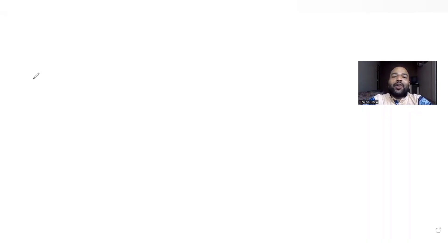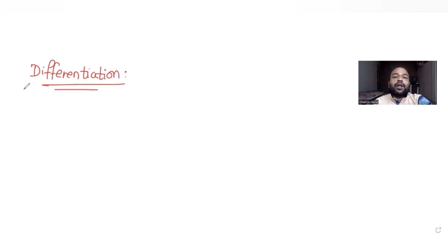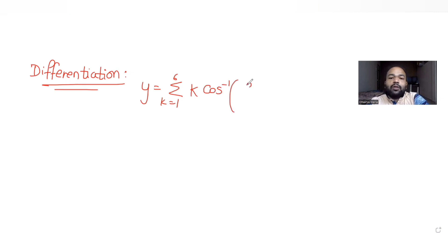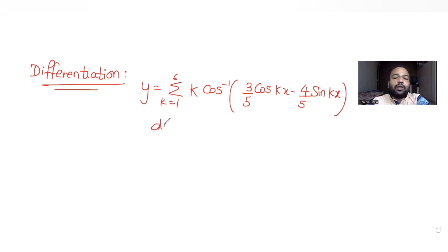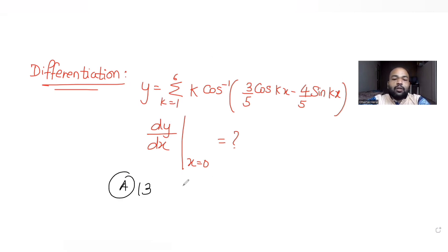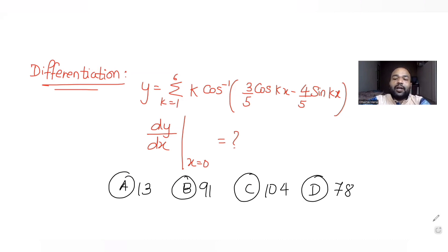Hi guys, I hope you are all doing well. Today's question is from the topic of differentiation. The question asks us to find summation of k equal to 1 to 6, where the expression is k cos inverse of (3/5 cos kx minus 4/5 sin kx). We need to find dy/dx at x equal to 0. The options given are 13, 91, 104, and 17.